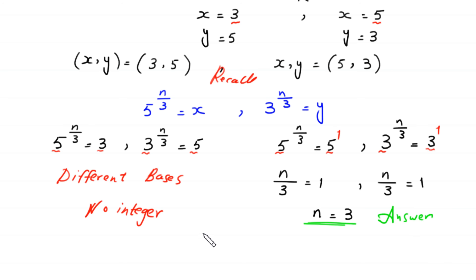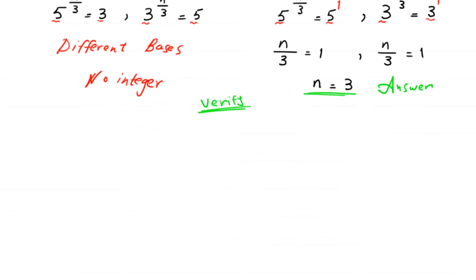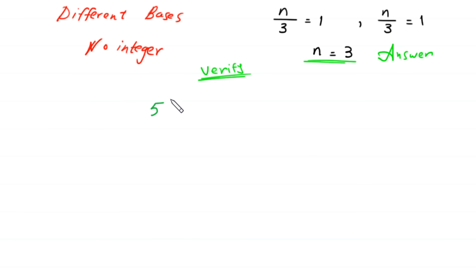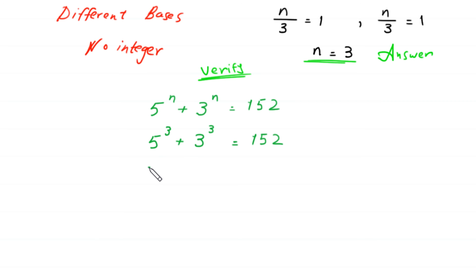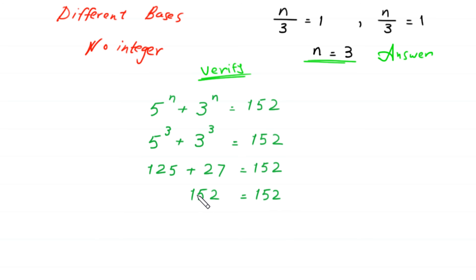Let's verify: substituting n = 3 into the original equation, 5³ + 3³ = 125 + 27 = 152. The left-hand side equals the right-hand side, confirming that n = 3 is correct.